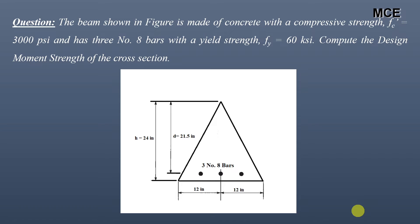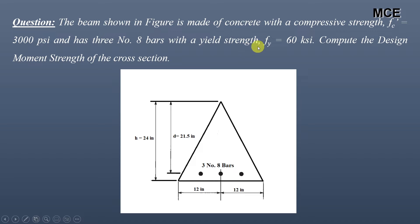Hello and welcome back to the Master of Civil Engineering. In this video we will learn how to find the design moment strength of an irregular shaped cross section using ACI 318. I have been given a beam made of concrete with compressive strength of 3000 psi, reinforced with 3 number 8 bars with a yield strength of 60 ksi. I have to find the design moment strength for this cross section.